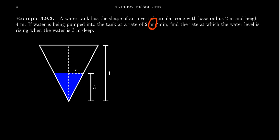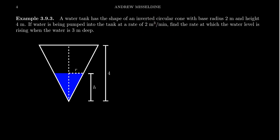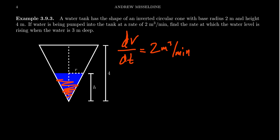Meters cubed measures volume, since it's length cubed, and minutes measures time. So 2 cubic meters per minute is a measurement of change of volume per time — it gives us information about dV/dt. If V is the volume of the tank, then dV/dt equals 2 meters cubed per minute. The water level is rising inside our tank as time persists.